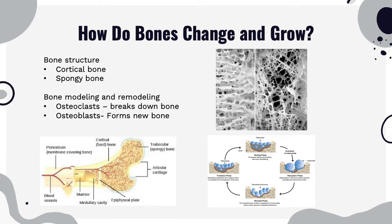To understand osteoporosis, we need to understand how bones change and grow. The bony skeleton serves both a structural function — providing mobility, support, and protection — and a reservoir function where it stores essential minerals. It consists of cortical bone on the outside, which provides strength and attachment sites for tendons and muscles, and an inner spongy bone network that provides a large surface area for mineral exchange. Bone is a mineralized connective tissue with four types of cells: osteoblasts, bone-lining cells, osteocytes, and osteoclasts. Osteoclasts break down bone, while osteoblasts form new bone.